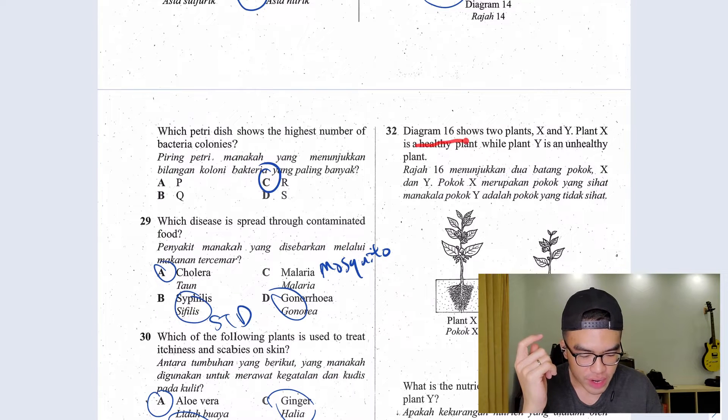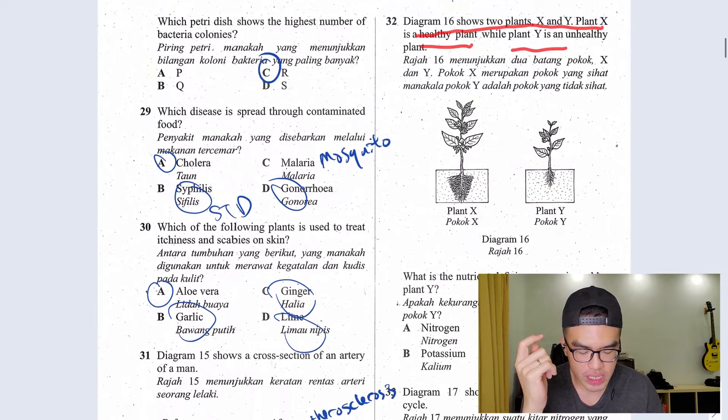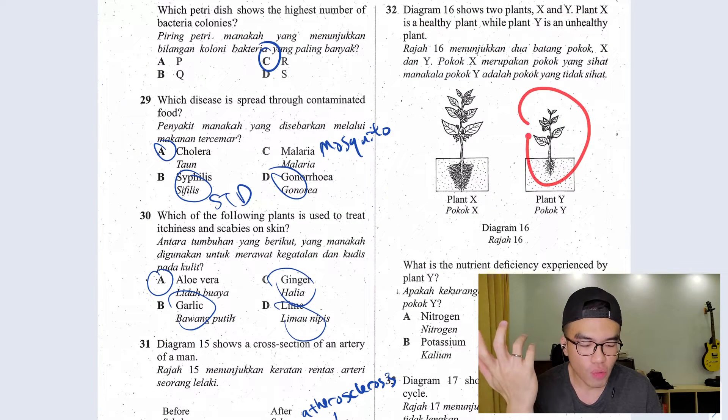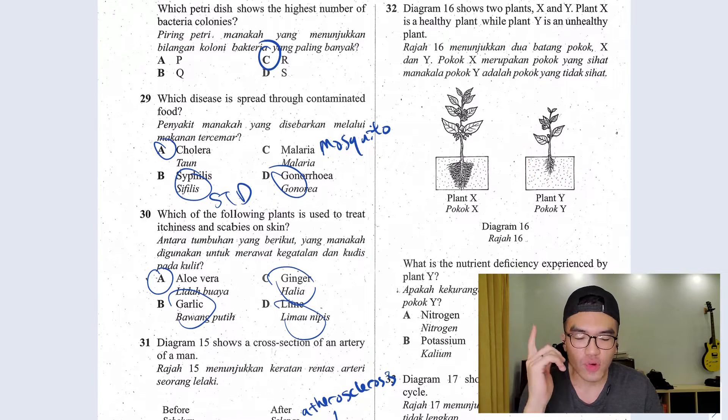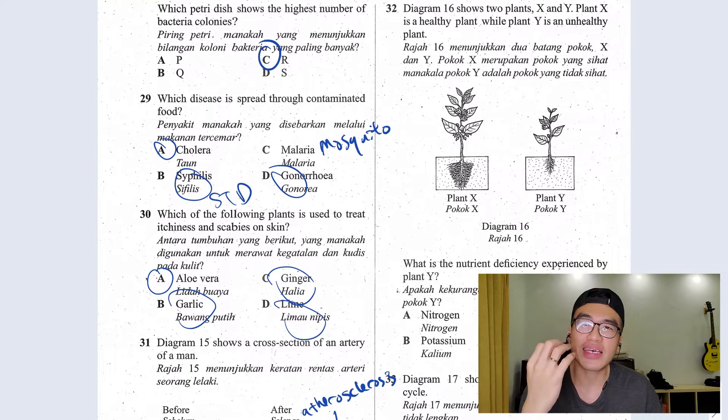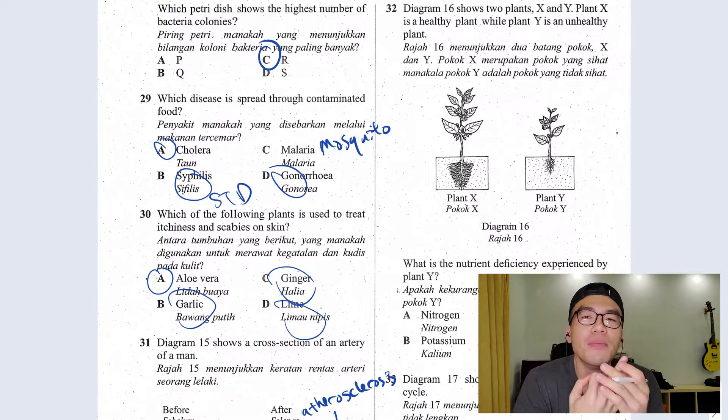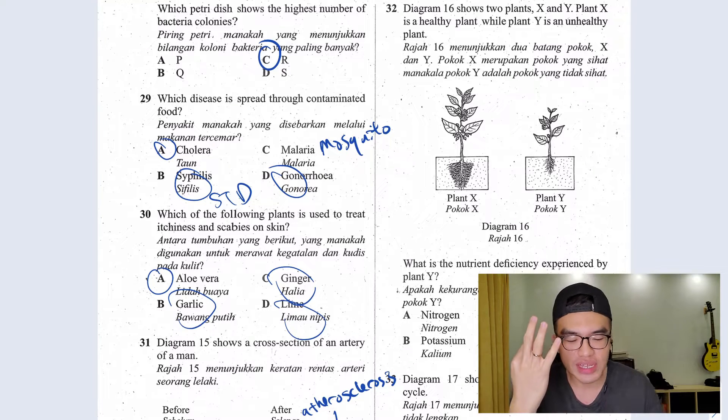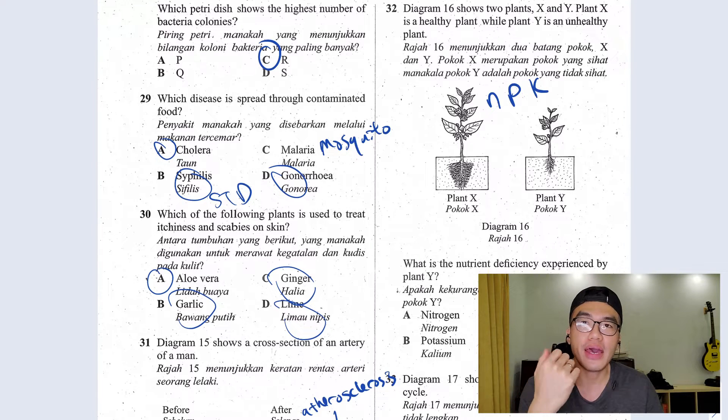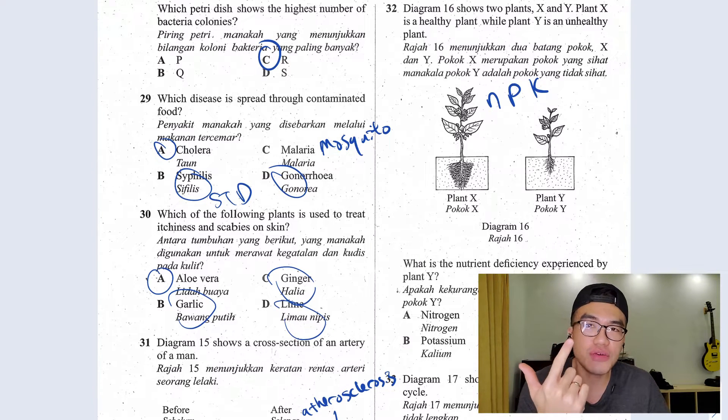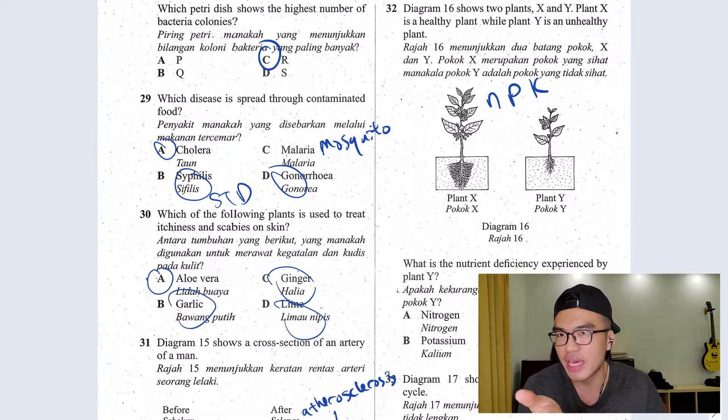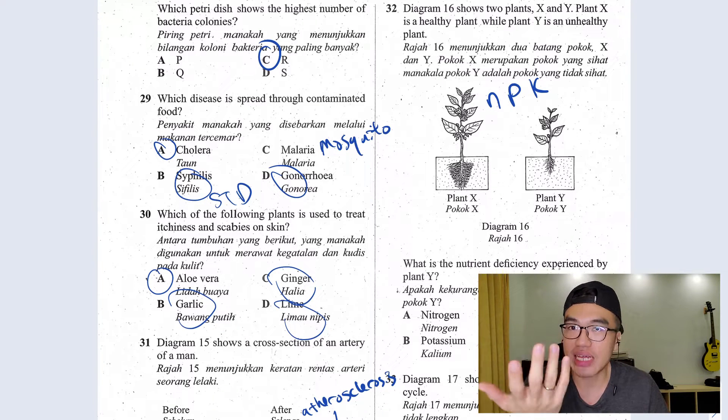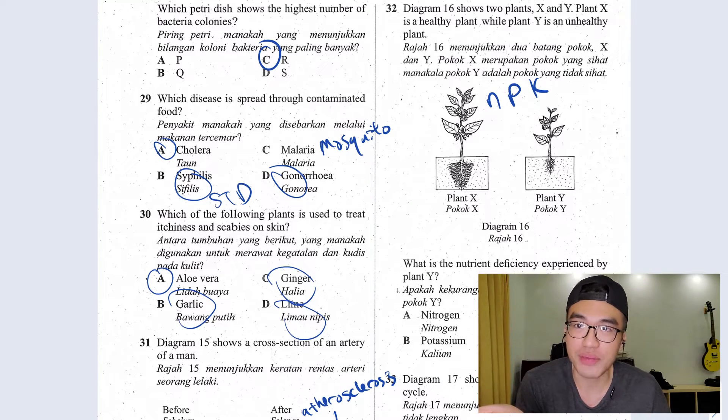Question 32, diagram 16 shows two plants X and Y. X is a healthy plant and Y is an unhealthy plant. As you can see, Y is very, very short. Quick revision. Plants has three macronutrients. Macro means they need it in huge amount. What are the three? The three would be known as N, P, K. N being nitrogen, P being phosphorus, K being potassium. Why is it K? Because K stands for kalium which is Latin.